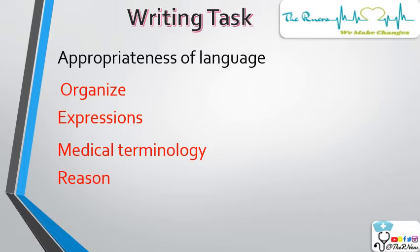Expression means you should always use a formal tone and avoid any informal tone. It should look like a professional letter. Do not write as if you are talking casually or writing to a college friend. Avoid informal words like 'gonna' for 'going to' or 'wanna' for 'want to,' and do not include any informal SMS texting in the OET writing — this will reduce your marks.